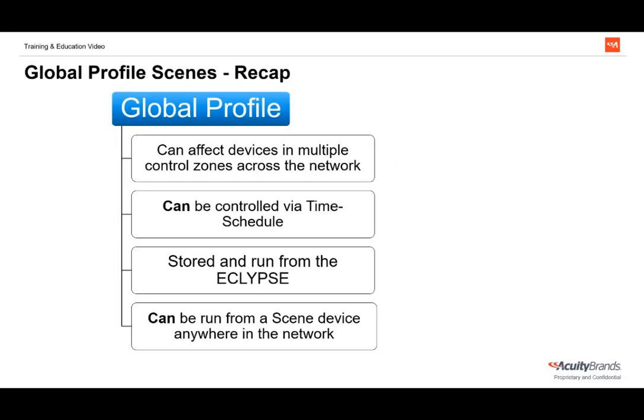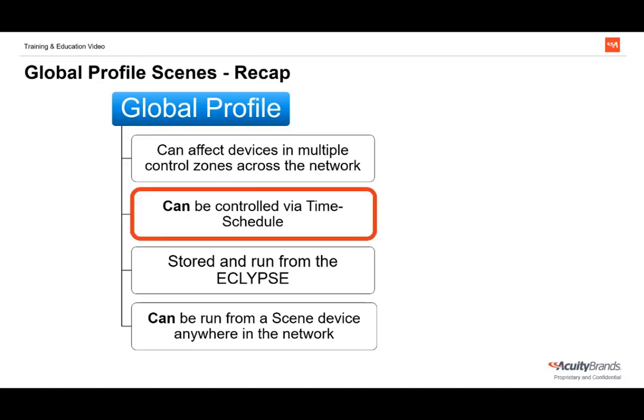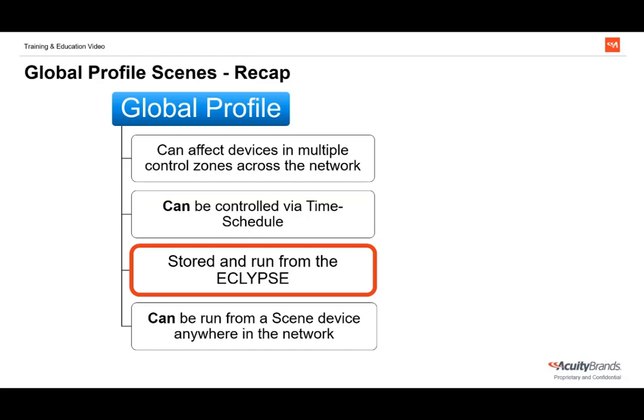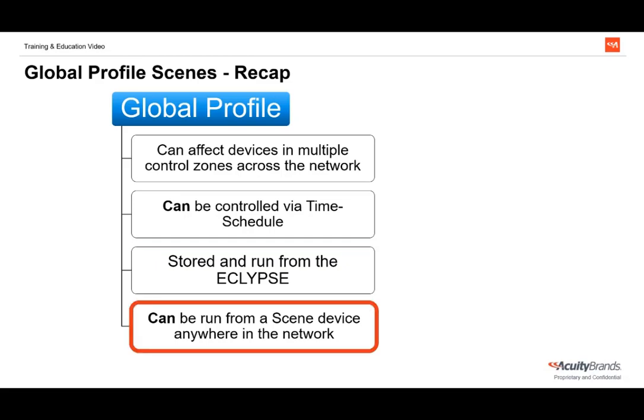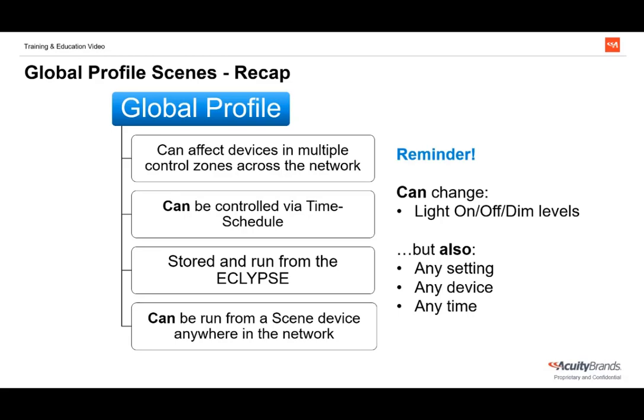Let's quickly recap global profiles. They can affect devices across the whole network, ranging from simply one device to every single device. They can be controlled by a time or astronomical schedule, and they are stored on and run from the eclipse — so global profiles are only available on a fully networked system. If a profile is not on a time schedule, it will need to be run from a scene controller or directly from SensorView. Remember that profiles can change any setting of any device, not just light levels.